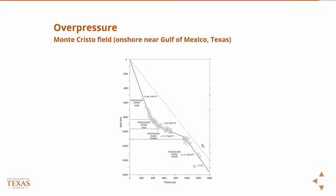This is a pressure log from Monte Cristo field, which is onshore in Texas near the Gulf of Mexico. It's pretty characteristic of what you see in almost all Gulf of Mexico type formations. What you'll see is an initially hydrostatic portion — the slope of this line is roughly 0.46 PSI per foot, very near what we define as hydrostatic.